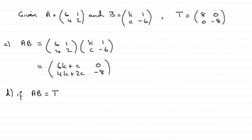Now for part D, we've got that if AB equals the matrix T we worked out earlier in the question, which was 8, 0, 0, minus 8, and if AB equals T, we've got to work out what the constants K and C are in the matrix B.